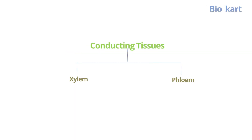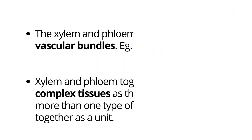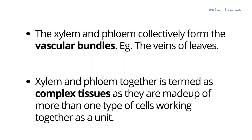Conducting tissues are of two types: the first one is xylem and the other one is phloem. Conducting tissues help in the transportation of the water absorbed by the roots and the food prepared by the leaves to the various other parts of the plants. Xylem and phloem collectively are known as vascular bundles. The best example of a vascular bundle is the veins which we are able to see on the leaves.